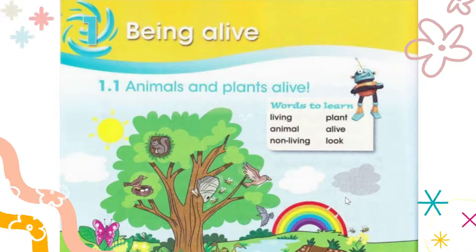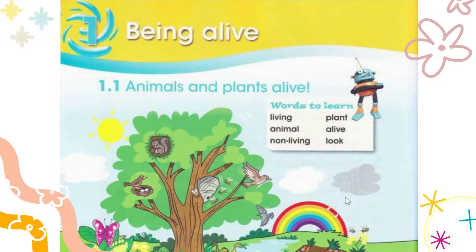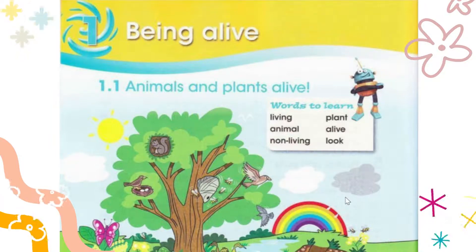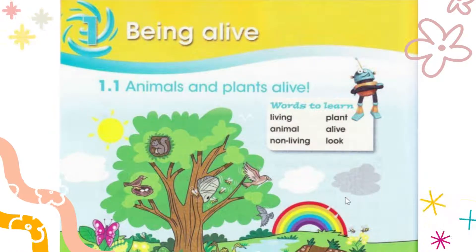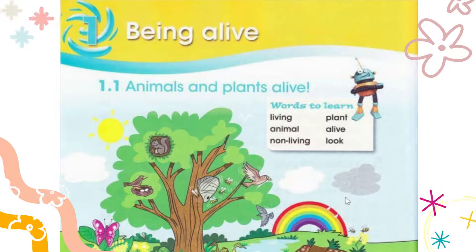Do you know what living and non-living things are? This topic is almost about that — animals and plants are alive. For animals, some people already know they are alive because they are somewhat similar to human beings. They have a heart, they can breathe, they can eat, they can excrete. But how are plants alive? That is the question. Yes, plants are living things on the earth.